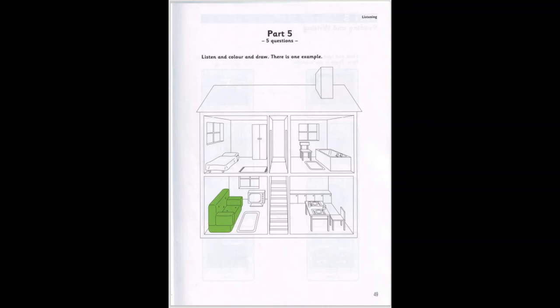There's a chair in the bathroom. Can you see it? Yes, I can. I want you to colour it. What colour? Yellow. OK. A yellow chair.